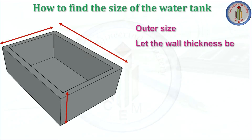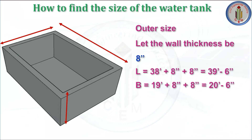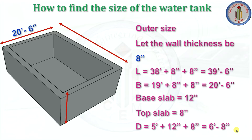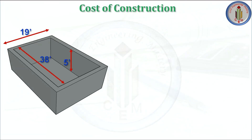Now let's calculate the outer dimensions. Let the wall thickness be 8 inches. Inner length is 38 feet, so outer length = 38 ft + 8 in + 8 in = 39 feet 6 inches. Outer breadth = 19 ft + 8 in + 8 in = 20 feet 6 inches. Base slab thickness is 12 inches and top slab is 8 inches. So total depth = 5 ft + 12 in + 8 in = 6 feet 8 inches.